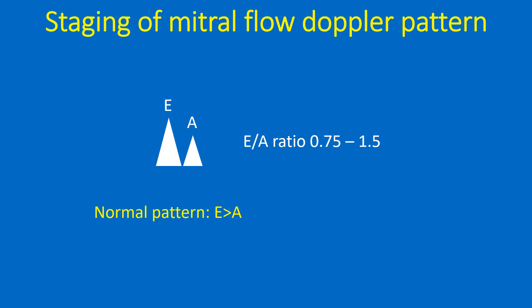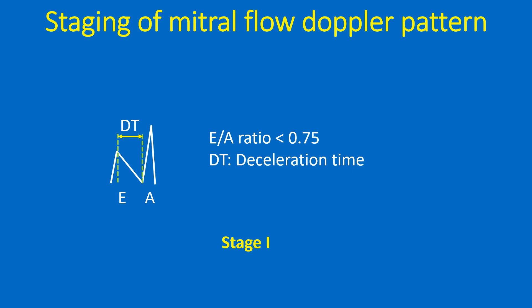The normal E by A ratio is 0.75 to 1.5. The mitral flow Doppler patterns in left ventricular diastolic dysfunction have been divided into 4 stages. In Stage 1, mild diastolic dysfunction, the E by A ratio is reversed and less than 0.75, due to increased A wave from more forceful atrial contraction. The deceleration time (DT) of early diastolic filling is normally less than 220 ms and is prolonged in diastolic dysfunction. These patients are generally asymptomatic.